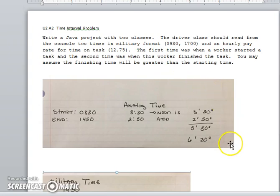This first example is showing what we would probably normally do if we were to calculate how many hours and minutes given a start time of 8:30 a.m. and an end time of 14:50 in military time.